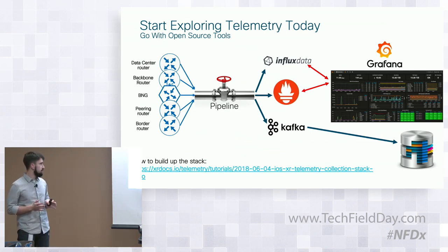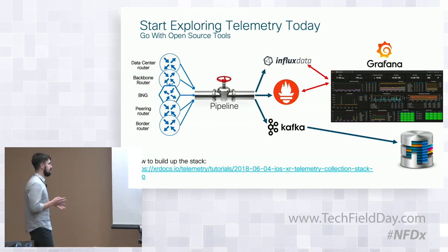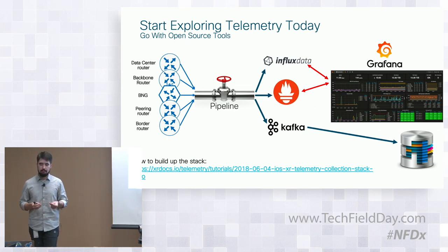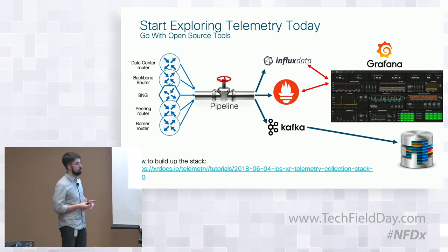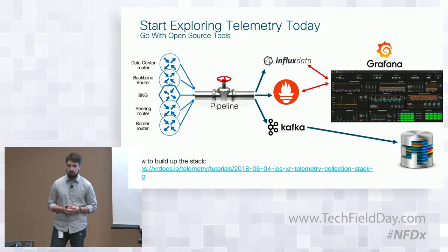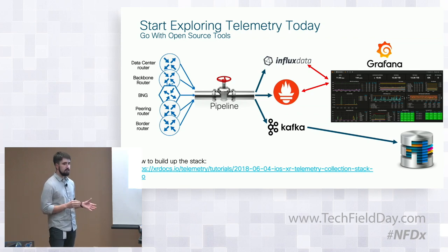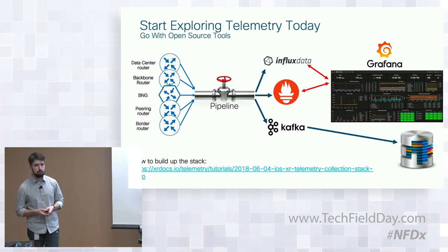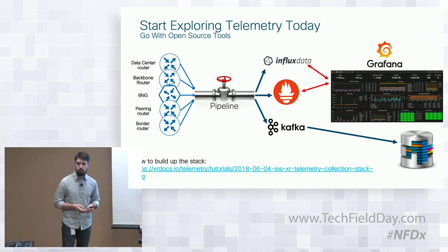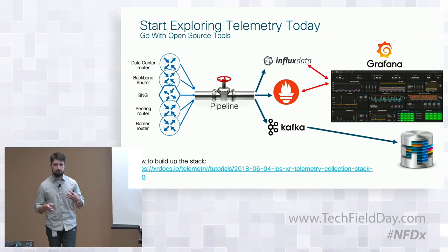You can start with telemetry today — no additional packages or licenses required. You just take your IOS XR box, and on the link below there is an example for a telemetry stack you can download from GitHub and deploy on your server or laptop to start collecting data. Your stack will consist of pipeline as a collector, and once data is digested in the pipeline, you can push it to one of the forward receivers — a time series database such as InfluxDB, a push gateway with Prometheus, or a Kafka bus for further consumption.